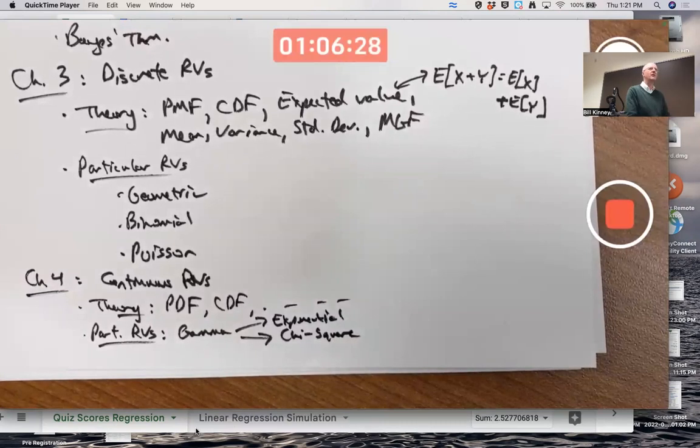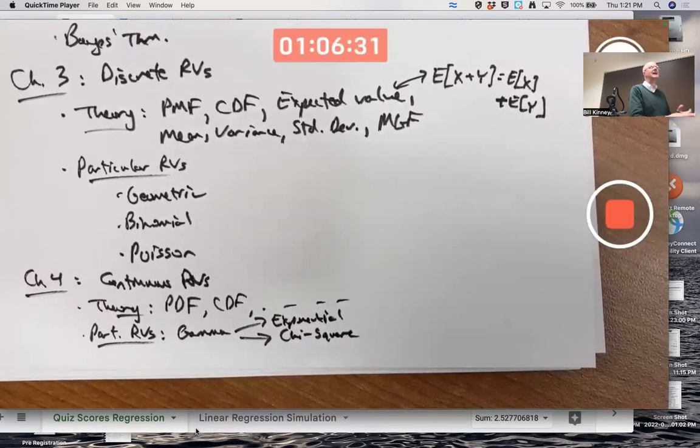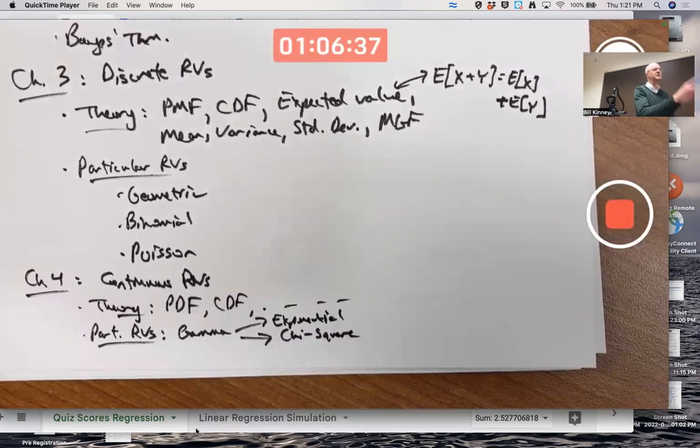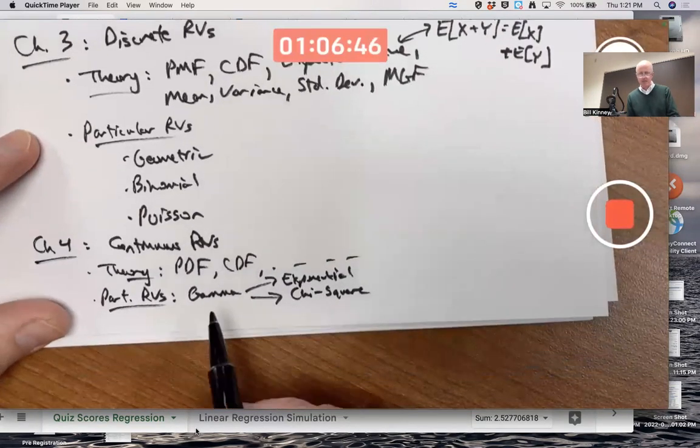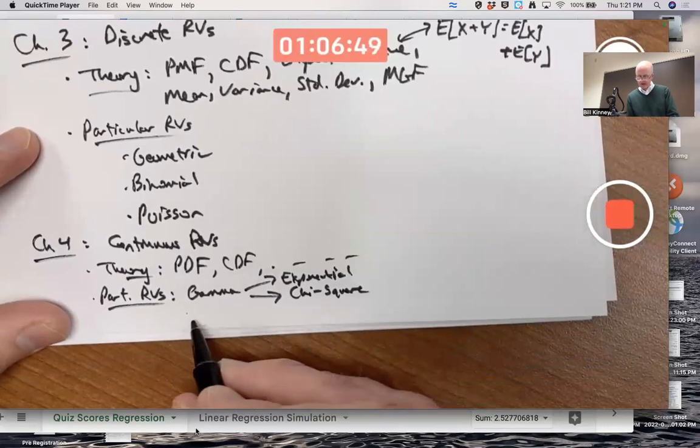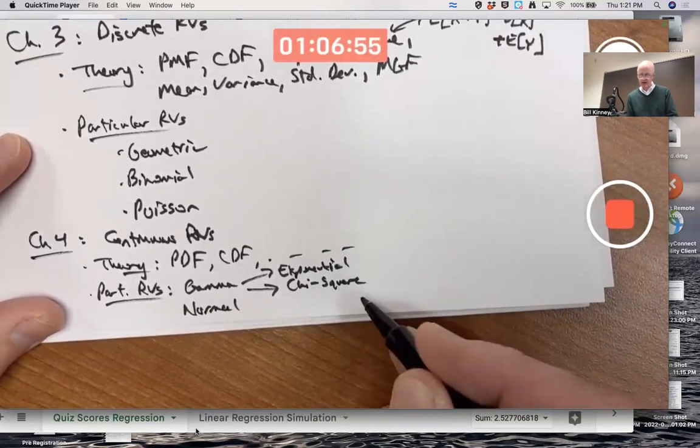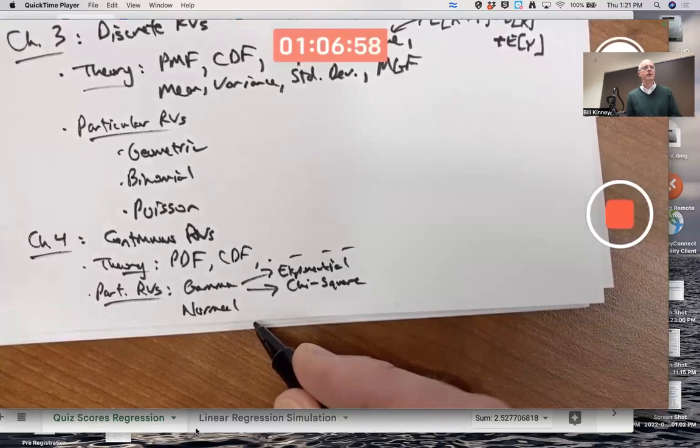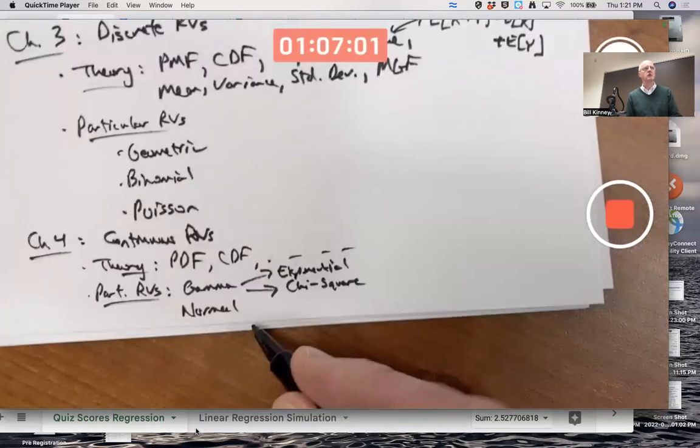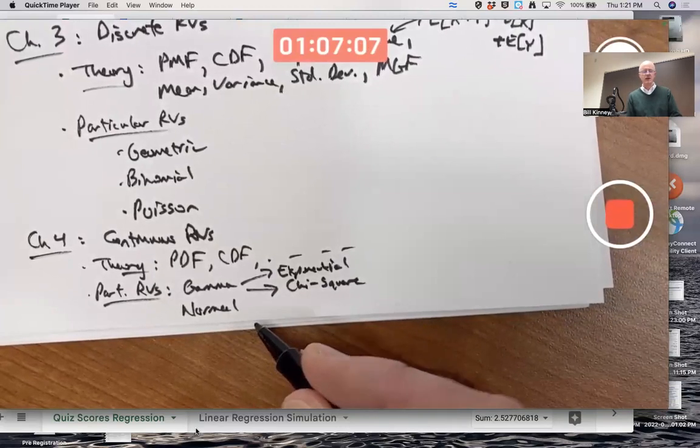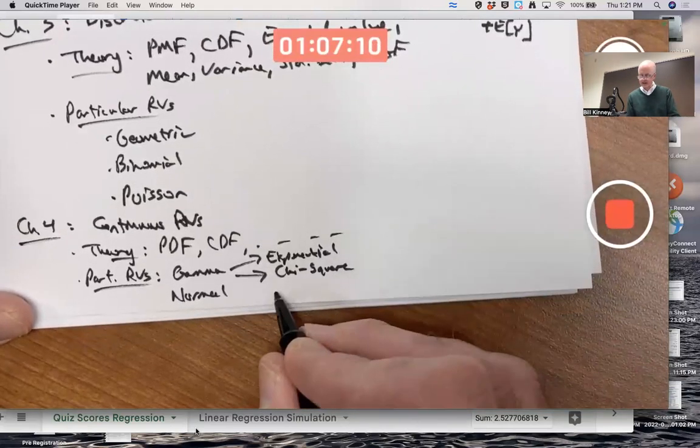We also talked about sort of cookbook, user-defined PDFs, like f of x equals some constant times x cubed or something over some interval. I think there was a problem on an exam like that. You got to figure out what the constant is to make it a valid PDF. You should be able to handle problems like that, too. Normal, gamma, sub-distributions, exponential, chi-squared, and normal were the main particular random variables in Chapter 4. There are plenty of others. We just don't cover them. I guess we did talk about the uniform as well. Mostly in the context of simulation.